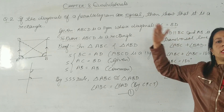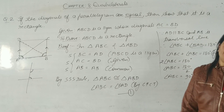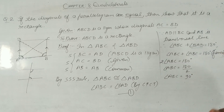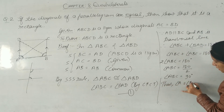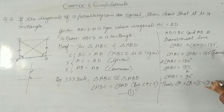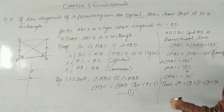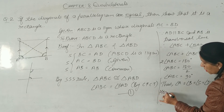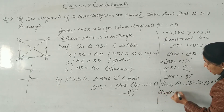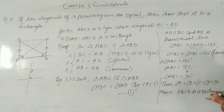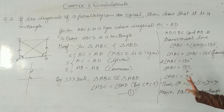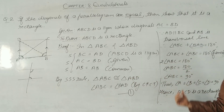Diagonals are equal, and opposite sides are equal. Therefore we can say that ABCD is a rectangle. You should write: angle A = angle B = angle C = angle D = 90 degrees. Hence, ABCD is a rectangle, because we have satisfied all the properties of the rectangle here.